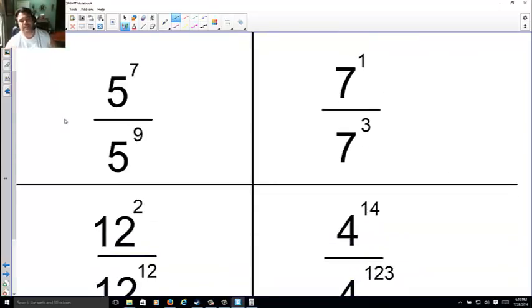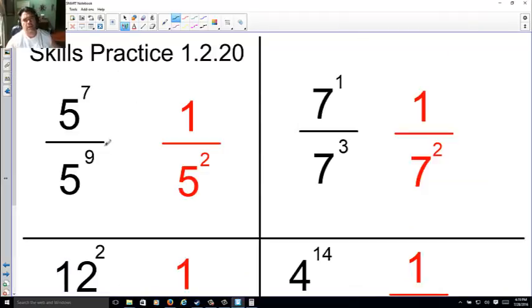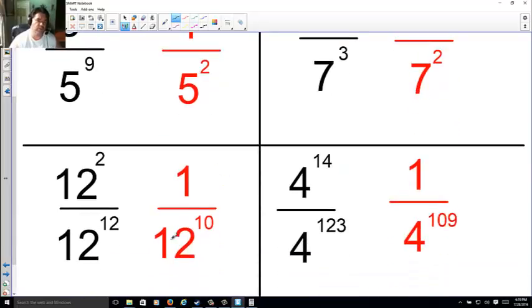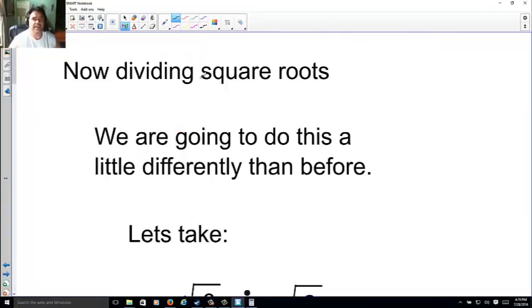Skills practice. Again, sort these out. Let's see how you did. First one, 1 over 5 squared. 1 over 7 squared. 1 over 12 to the 10th, excuse me. And 1 over 4 to the 109th. Now, this looks really large, but you're just subtracting. As long as you know how to do that, not a big deal.